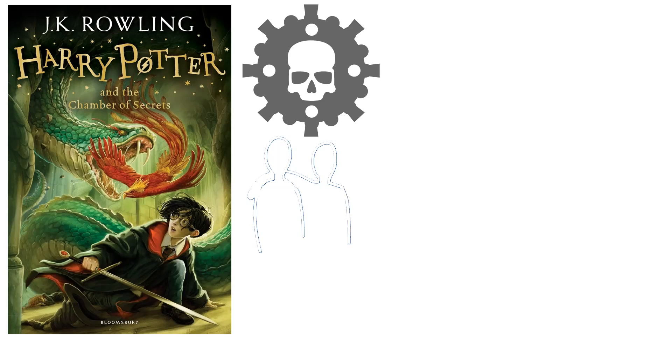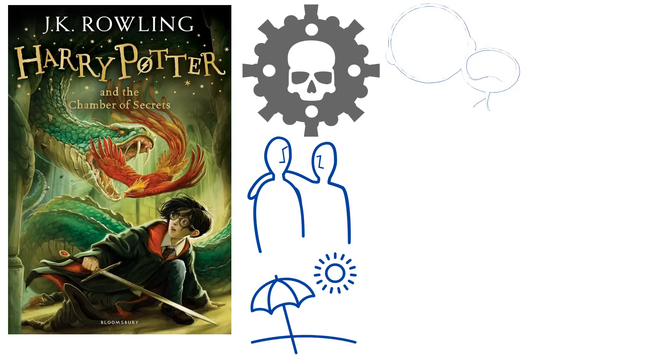After completing his first year at Hogwarts School of Witchcraft and Wizardry, young wizard Harry Potter spends the summer with his non-magical relatives, the Dursleys. Harry is 12 years old at the time. A wicked wizard by the name of Voldemort was responsible for the deaths of Harry's parents a little more than a decade ago.